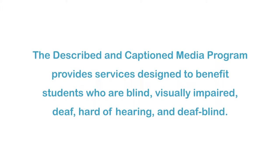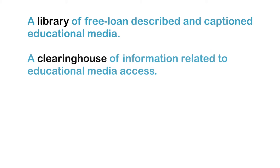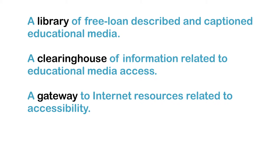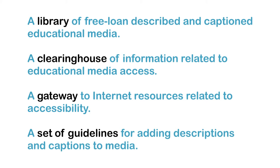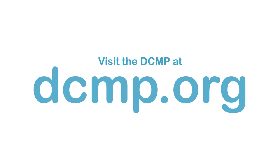The Described and Captioned Media Program provides services designed to benefit students who are blind, visually impaired, deaf, hard-of-hearing, and deaf-blind. These services include a library of free loan described and captioned educational media, a clearinghouse of information related to educational media access, a gateway to Internet resources related to accessibility, and a set of guidelines for adding descriptions and captions to media. There are no user registration or service fees. Visit the DCMP at dcmp.org.